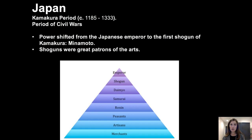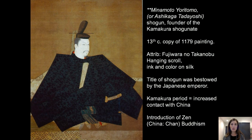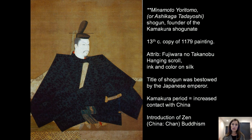The first Shogun of the Kamakura was Minamoto. This portrait — Minamoto Yoritomo — has recently been debated; some believe it now represents Ashikaga Tadayoshi, the brother of a later Shogun. If it is Minamoto Yoritomo, it would be the portrait of the founder of the Kamakura Shogunate. It's a 13th-century copy of an 1179 painting attributed to Fujiwara no Takanobu, a hanging scroll with ink and color on silk. The title of Shogun was bestowed by the Japanese Emperor, though it was probably more of a forced arrangement.